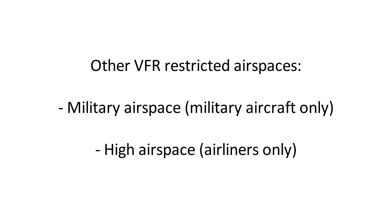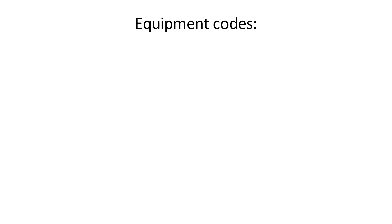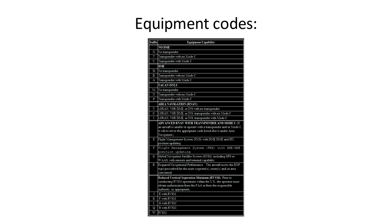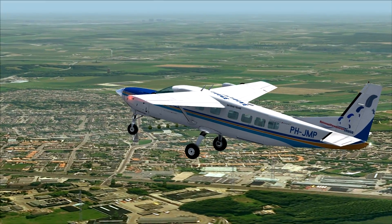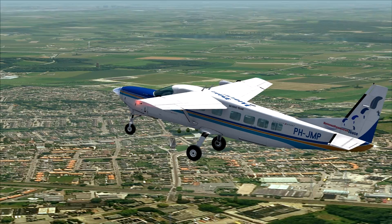Before we end this video, let's discuss equipment codes. We've seen these in the flight plan video on how to file a flight plan on the VATSIM network. Equipment codes show air traffic control what your aircraft is capable of — for example whether you have TCAS. It's wise to enter one of those codes in your flight plan. You add them behind your aircraft type, allowing ATC to determine how well you'll be able to fly a certain route.